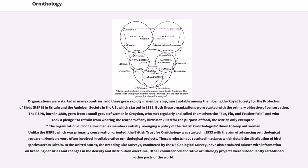Both the RSPB and the Audubon Society were started with the primary objective of conservation. The RSPB, born in 1889, grew from a small group of women in Croydon who called themselves the Fur, Fin, and Feather Folk and who took a pledge to refrain from wearing the feathers of any birds not killed for the purpose of food, the ostrich only exempted. The organization did not allow men as members initially, avenging a policy of the British Ornithologists' Union to keep out women. Unlike the RSPB, the British Trust for Ornithology was started in 1933 with the aim of advancing ornithological research.